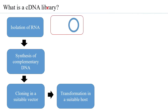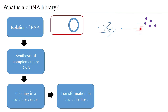From a cell having a certain functionality, the RNA is isolated. From the RNA, what is of interest in the cDNA library is the mRNA. Once one gets the mRNA, primers that are complementary to the mRNA are added, and they can bind to each and every mRNA.